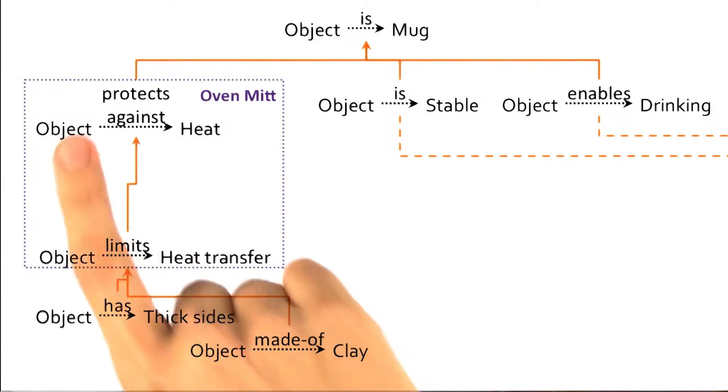The definition of oven mitt tells us that it protects against heat because it limits heat transfer. So using oven mitt, we can complete this proof.